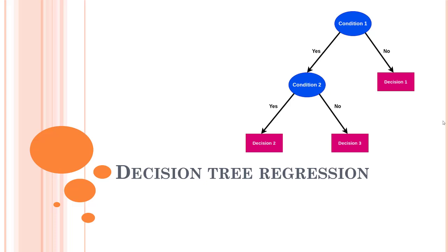Hi everyone, welcome back to this course of data science and machine learning. We are going to start with the next step, that is decision tree regression. Before jumping into the regression part, let's look into what exactly a decision tree is. Previously we completed simple linear regression, multivariate linear regression, and polynomial regression.